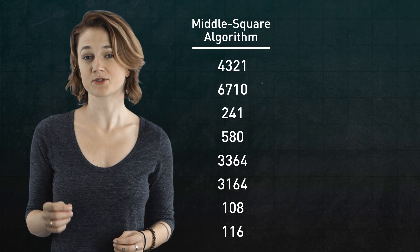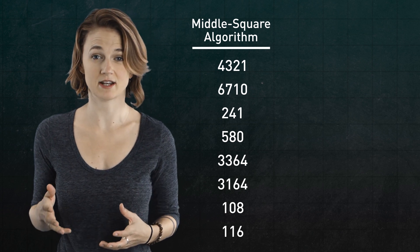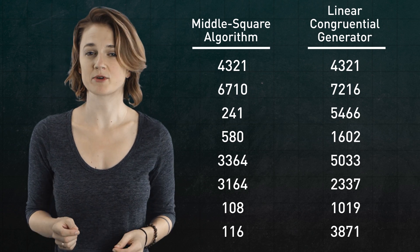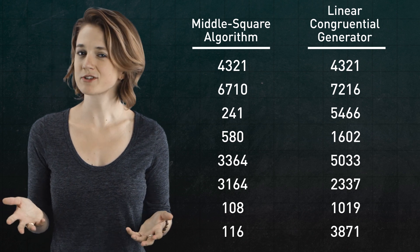Here's our sequence from the middle square algorithm, where the numbers range between 0 and 9,999. And here's our sequence from the linear congruential generator, where the numbers range between 0 and 7,828. Which one looks more random to you?